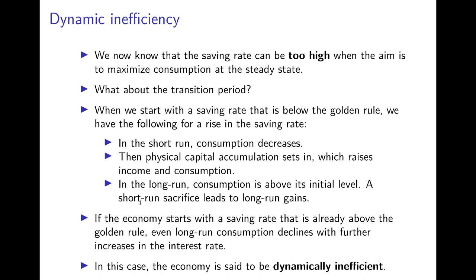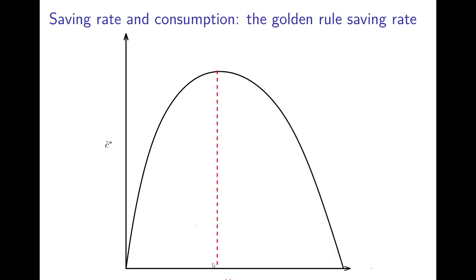However, what happens when we start with a saving rate already above the golden rule - higher than the saving rate that maximizes steady state consumption? In this case we have a Pareto inefficiency, because we could make everybody in the economy better off by reducing the saving rate. If we reduce the saving rate, consumption at the steady state increases because we are already beyond the golden rule level. But also consumption in the short run would be higher because we've reduced the saving rate. In this area, the economy is said to be dynamically inefficient - it has an inefficiently high saving rate, and we are to the right of the golden rule saving rate.